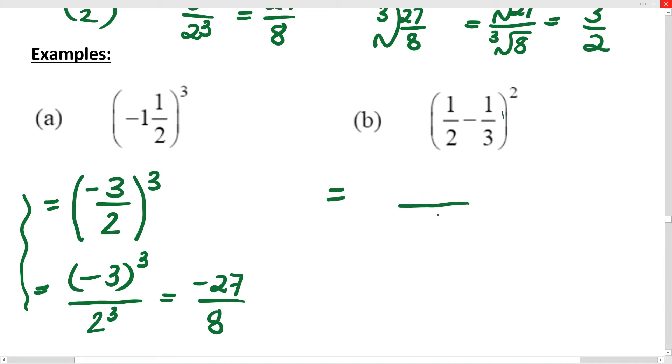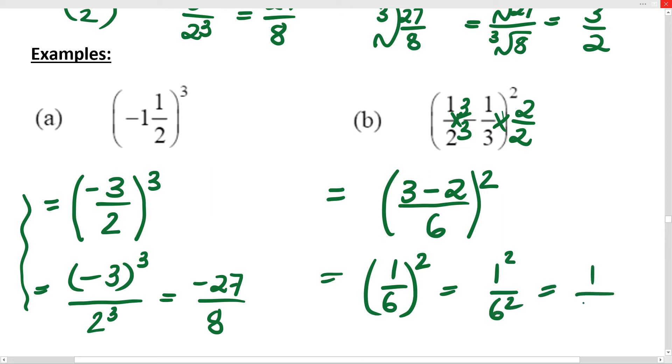Then this one I need to times by 3 over 3. So it's going to be 1 times 3 at the top, so 3. Copy and paste the minus. And this one I need to times by 2 over 2. 1 times 2 is 2. We've got it. That answer, whatever it is when we get there, needs to then be squared. 3 minus 2 is 1 and the 6 is just the 6. And now I'm going to square that, which means I need to take 1 squared over 6 squared. 1 squared is 1. You probably know that 6 squared is 36. And that's my answer.